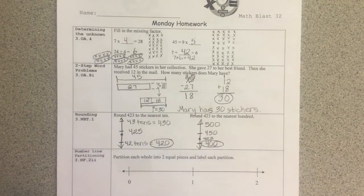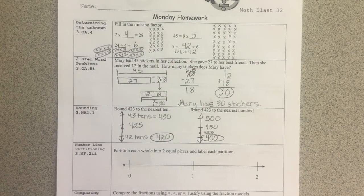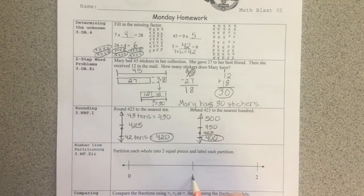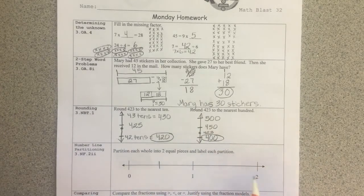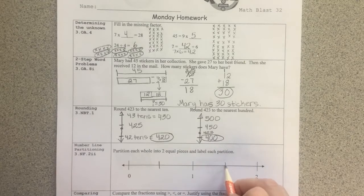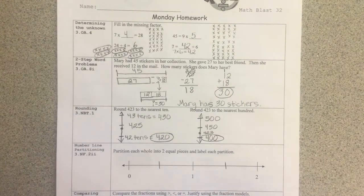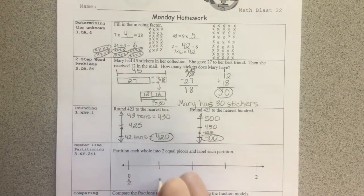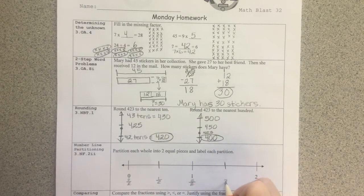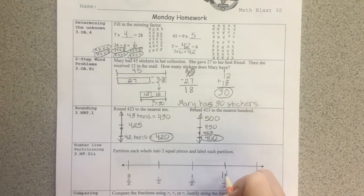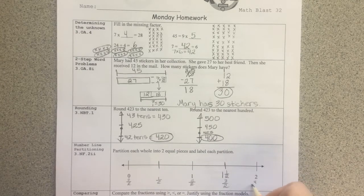Number line partitioning. Partition each whole into two equal pieces and label each partition. Well, the whole is from zero to one. If I want to partition that into two equal pieces, I'm going to split that right in half there. One to two is another whole. To partition that into two equal pieces, we'll split that whole right there in half. So I have zero halves, one half, two halves is the same thing as one whole. This would be three halves or one whole and one half towards another whole. And then two wholes is the same thing as four halves.